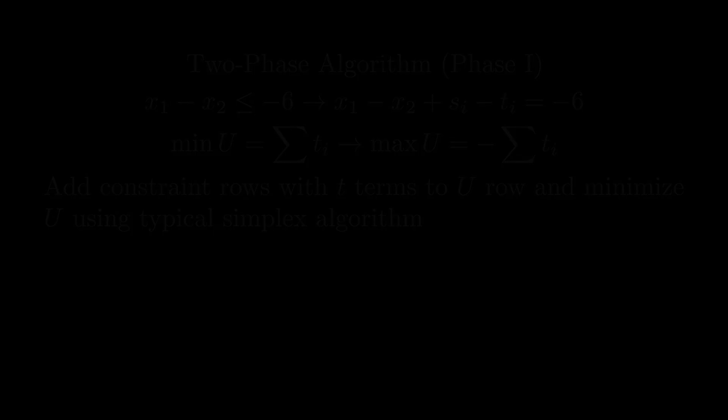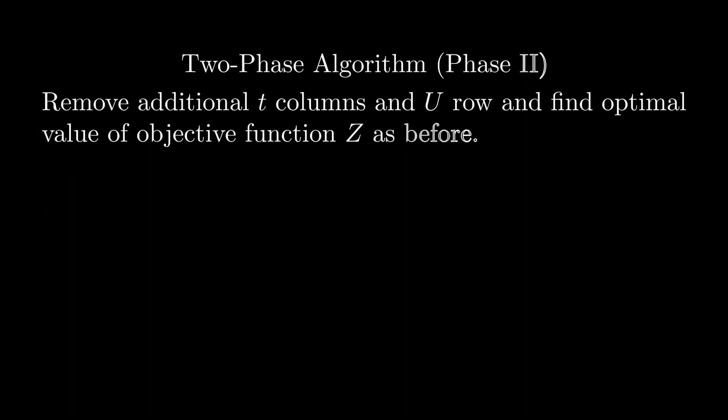We now perform phase 2, where we remove the additional columns for the t variables, as well as the row for u. We now have access to a canonical tableau, which we can solve normally using the standard simplex algorithm. Let's look at an example of this process in action to get a better sense of how this actually works.